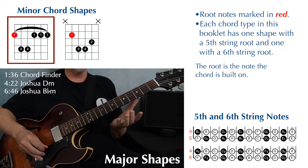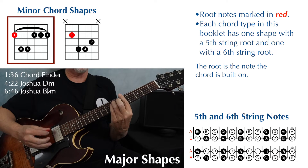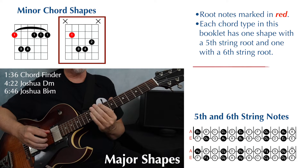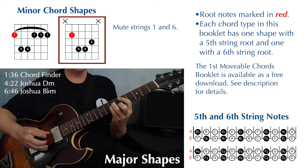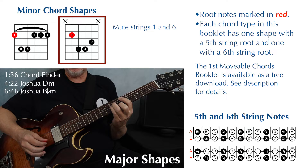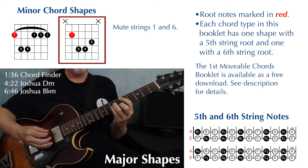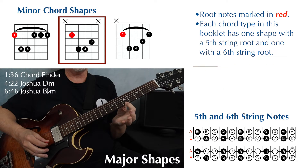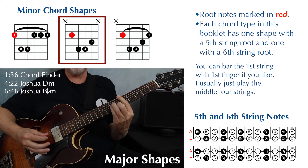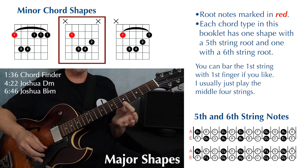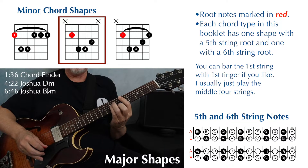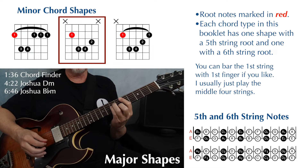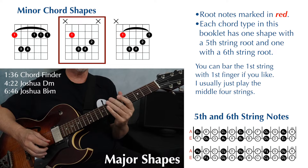Finger one is barring strings one through six. Here's what our fifth string minor shape looks like: finger one, three, four, and two. We are muting strings one and six. Some people like to bar string one with this shape — if you do that, you'll be barring with your first finger, and that's okay. I like to do it with just the middle four strings, barring that first string only if I have to.